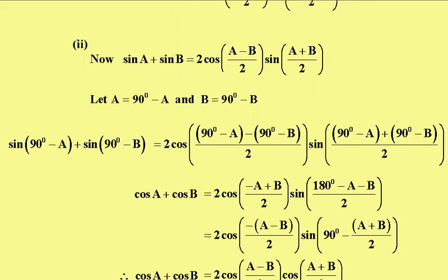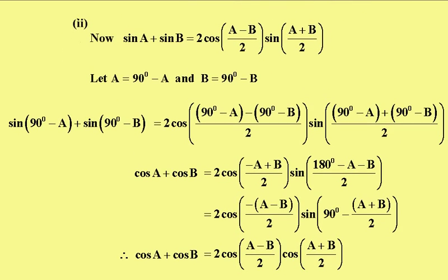From the previous video we know, the same sort of thing, we know that the sine of A plus the sine of B equals 2 cos of (A-B)/2 times sine of (A+B)/2.